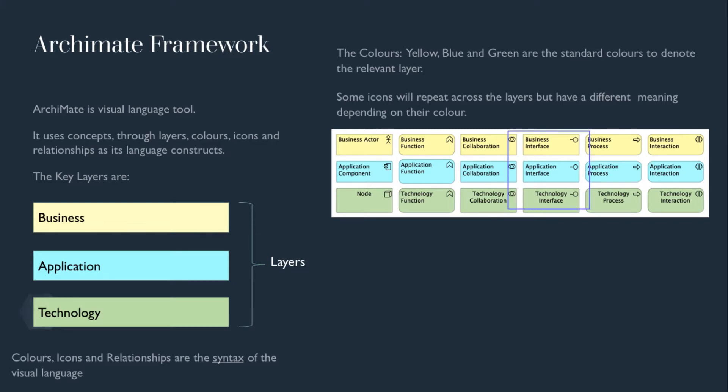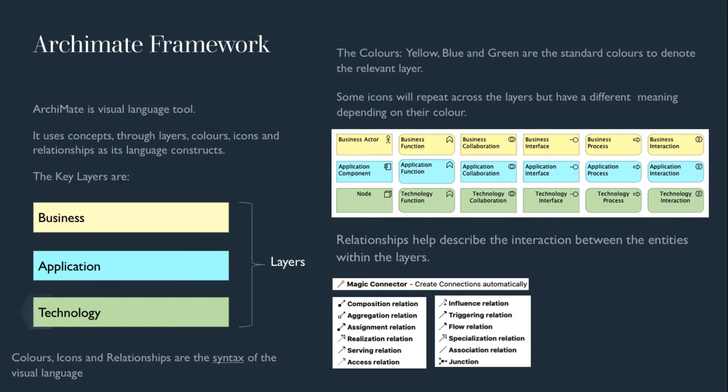Some icons will repeat across the layers but have different meanings depending on the color. For example, the business interface, application interface and technology interface have the same icon but different color and therefore different meaning. Additionally, we have relationships that describe the interaction between the entities within the layers.